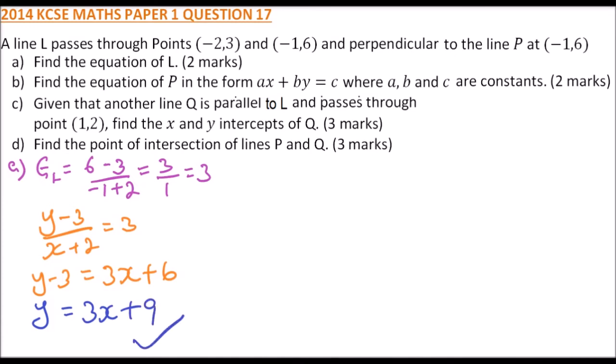Now we come to part b. Find the equation of p in the form ax + by = c, where a, b and c are constants. Because line p is perpendicular to line L...